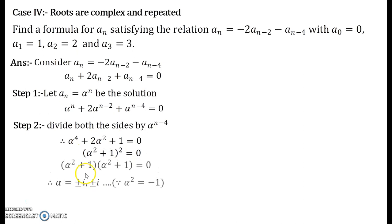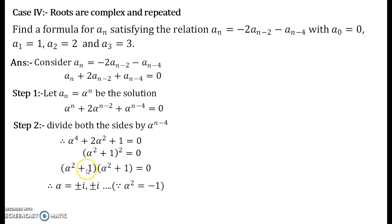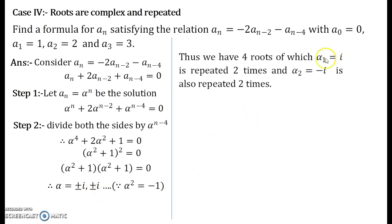On solving this further, what you obtain is (α^2 + 1)(α^2 + 1) = 0, and when you further solve this you obtain α = ±i and ±i. Now observe here carefully: since the degree of this equation was 4, you obtain 4 roots in front of you. Now if you observe carefully, α = +i is repeated 2 times and -i is repeated 2 times. So I call α_1 = i and α_2 = -i, where both of the roots are repeated twice.